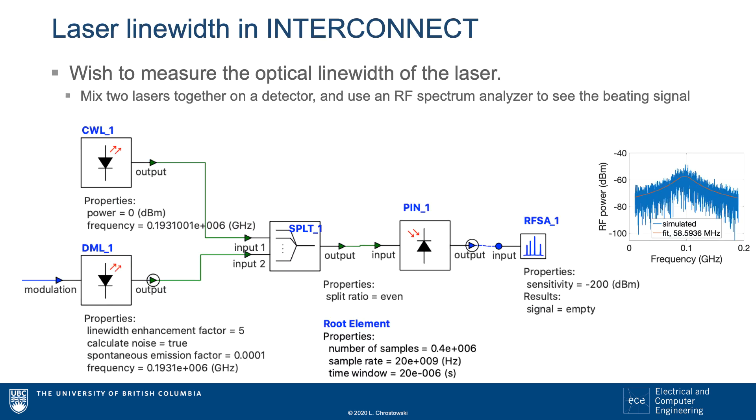There are several methods to measure the optical linewidth of a laser. The standard approach is to use the mixing properties of a detector by taking two optical signals, adding them, having the detector mix the signals, and measuring the RF spectrum.